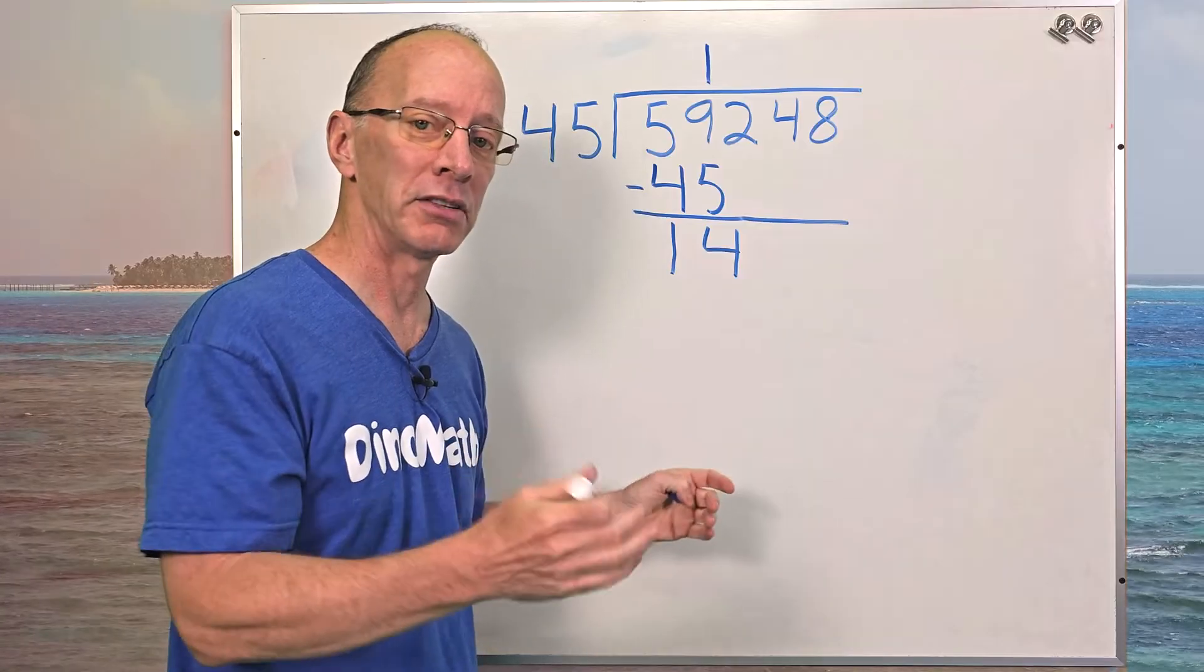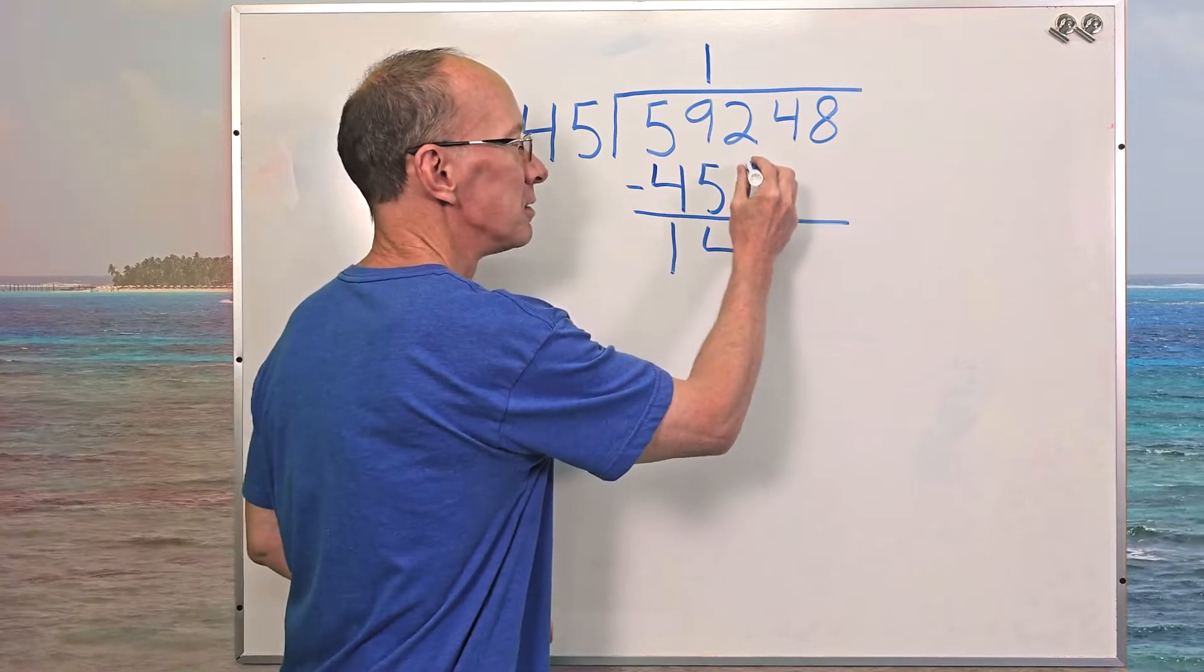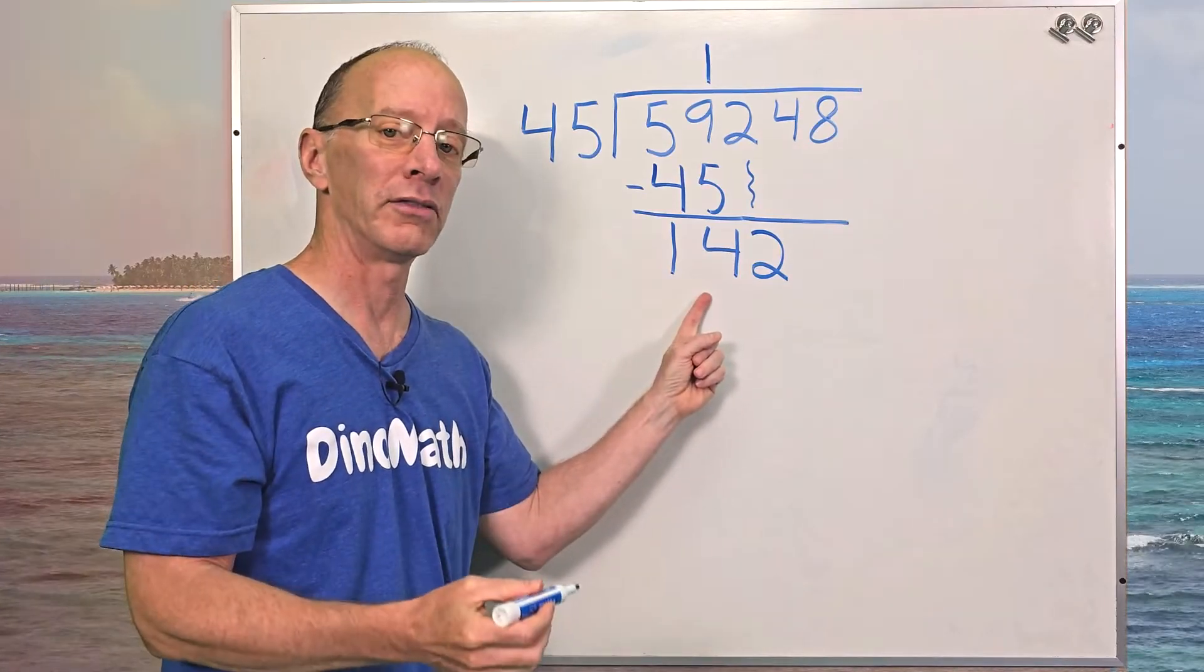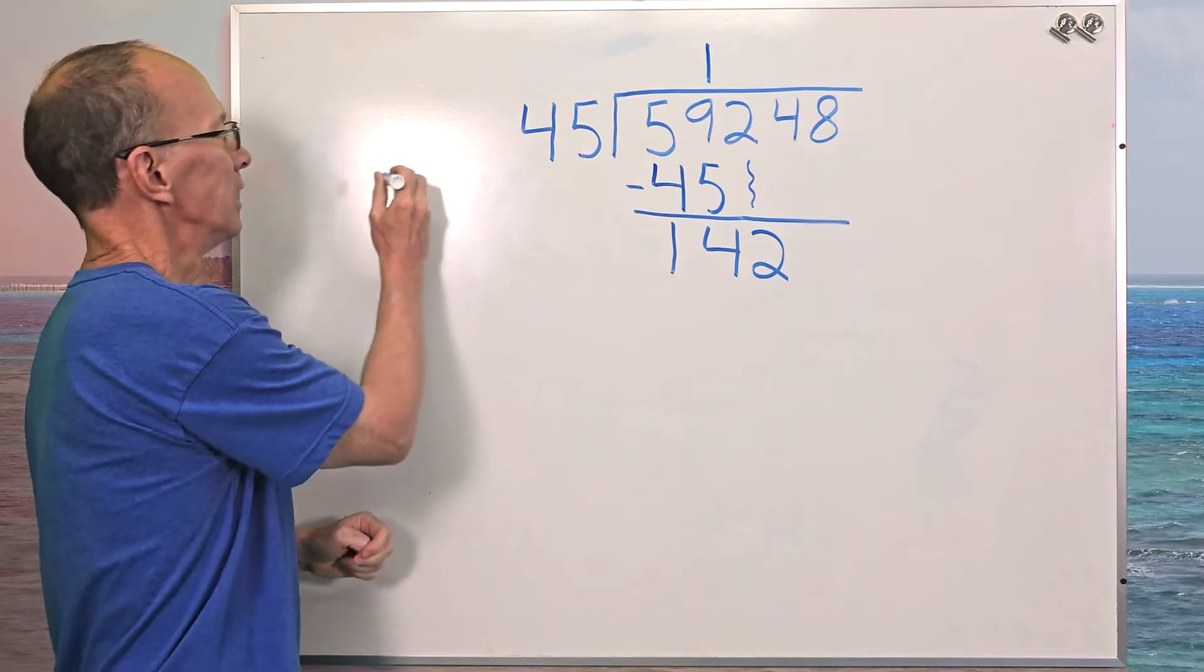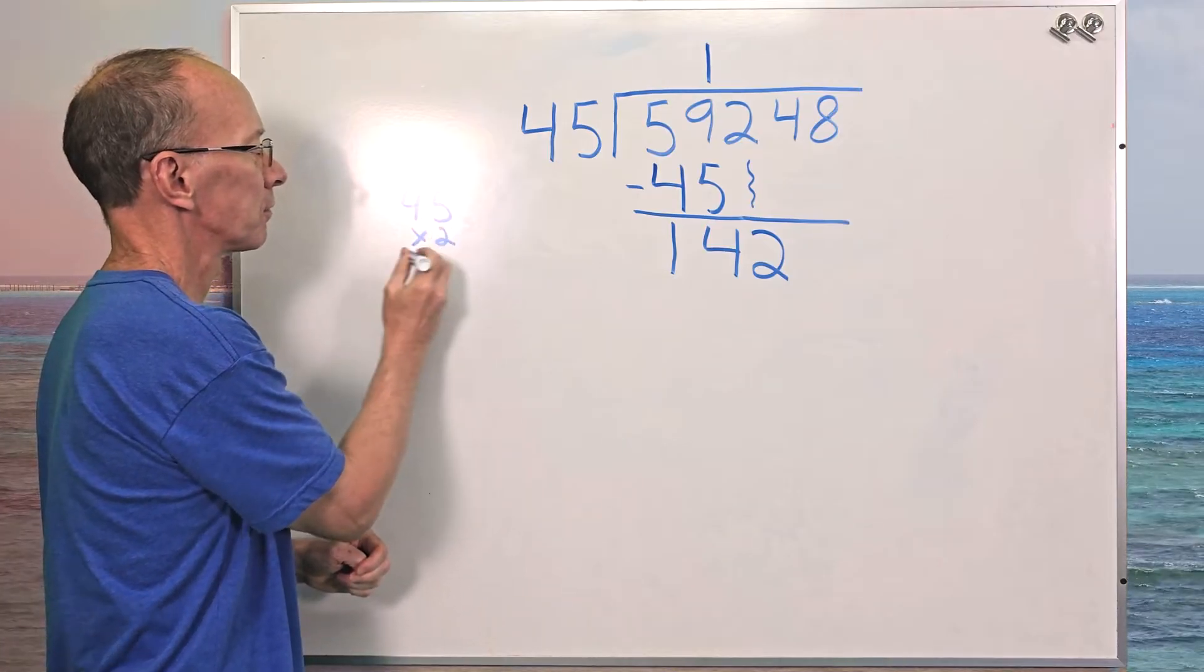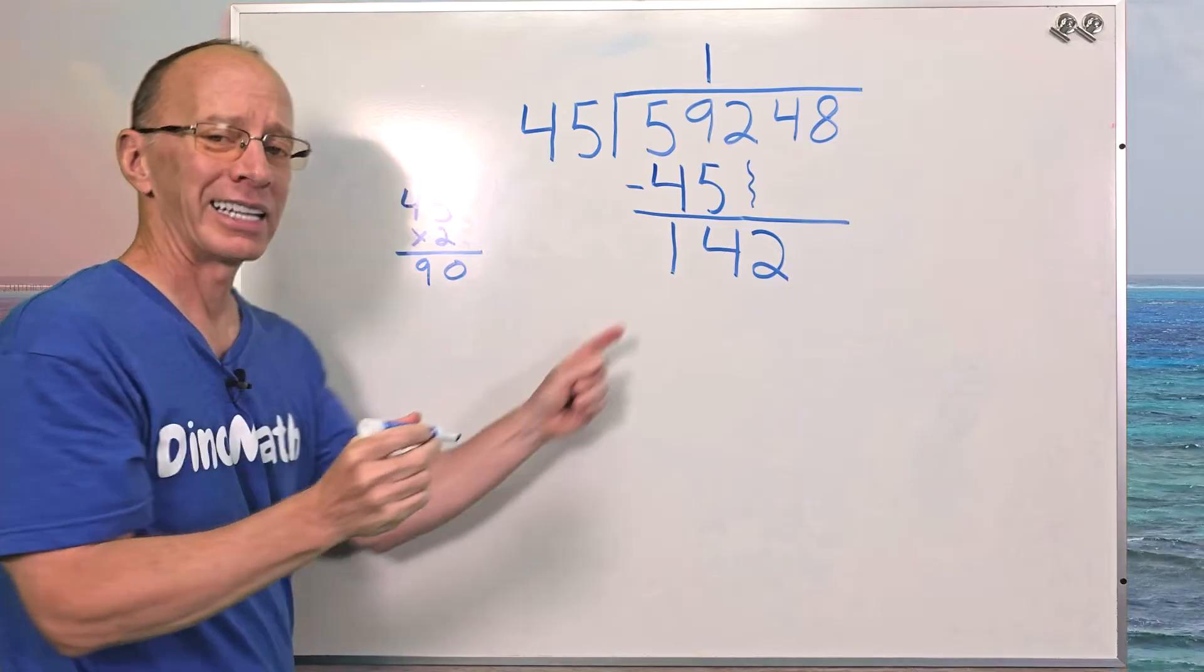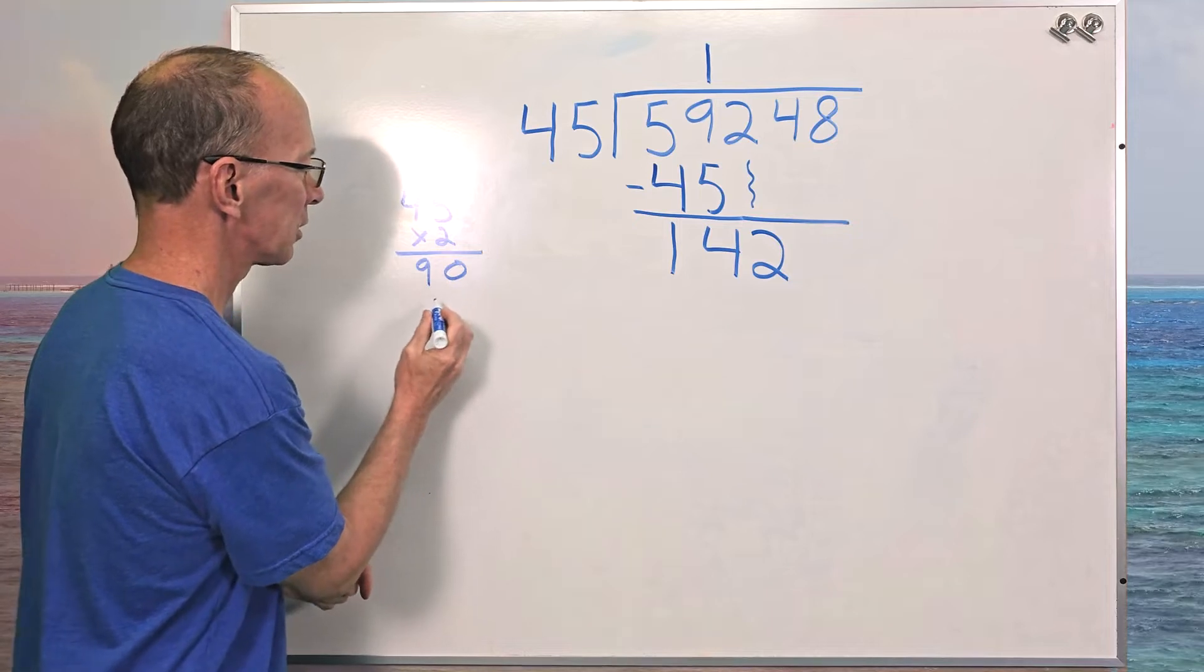Nine minus five equals four. And then five minus four is one. So I still have a two digit number, but it's smaller than 45. So don't worry about it. What is our next step? You bring that next number down. So now I got to figure out how many times can I put 45 into 142. So we have to do a little figuring over on the side right here. I'm going to put 45 times 2, and 5 times 2 would be 0, carry the one. Four times 2 is 8, plus the one would be 90.